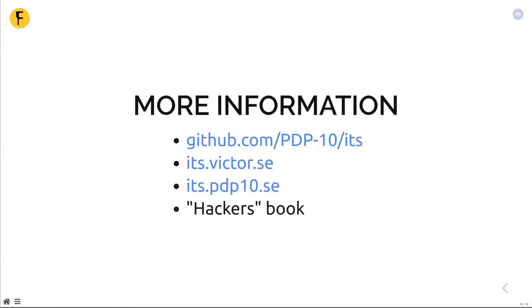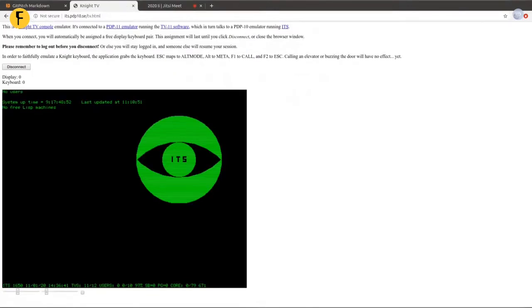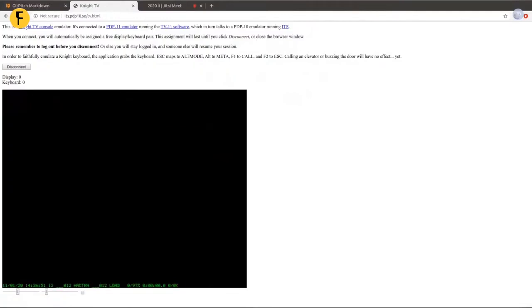That concludes my presentation. I included some pointers to more information if you want to learn more. There's the source code on GitHub, a wiki made by another Swedish person, and my ITS site at ITS-PDP10.se. There's also a book called Hackers which has a lot of information about ITS. The web page does have some access to ITS — here is one of the bitmap raster displays being emulated, so I can actually log in and use ITS from here. It's a bit slow because it's running on a Raspberry Pi, but it's working.